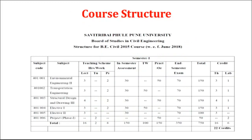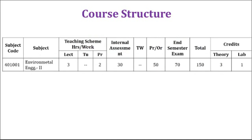You might be knowing the core structure for BE Civil — there are totally six subjects: Environmental Engineering 2, Transportation Engineering, Structural Design and Drawing 3, Elective 1, Elective 2, and Project Phase 1. The subject code for Environmental Engineering 2 is 401-001. There are three lectures per week and two practicals per week. The in-semester examination is of 30 marks, oral examination of 50 marks, and end-semester examination is of 70 marks, totaling 150 marks. There are three credits for theory and one credit for the lab.